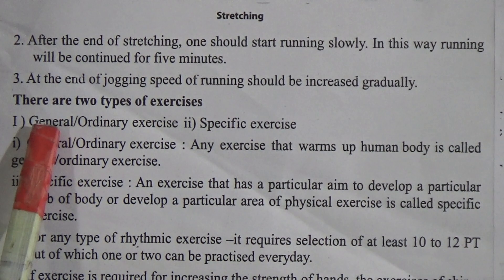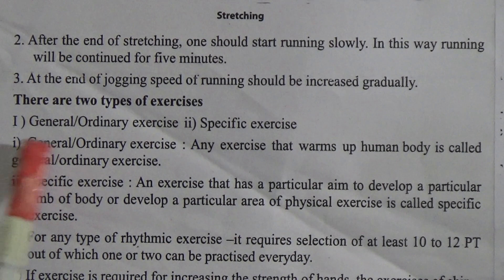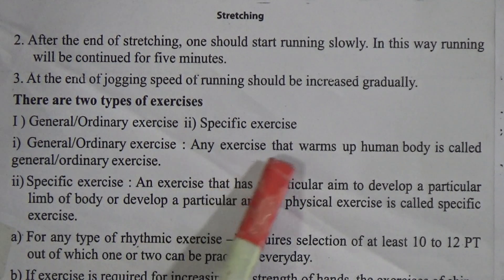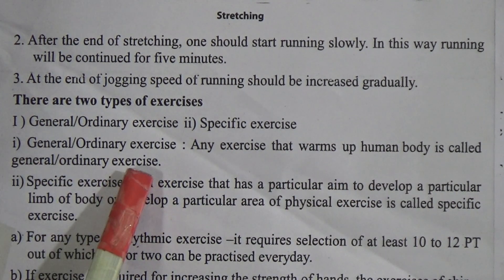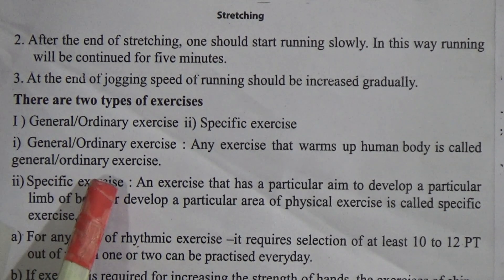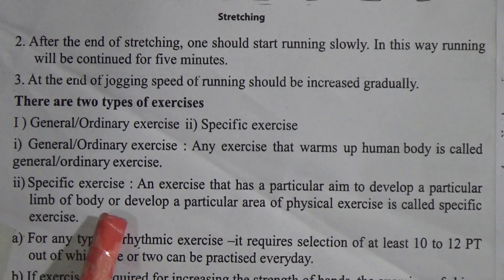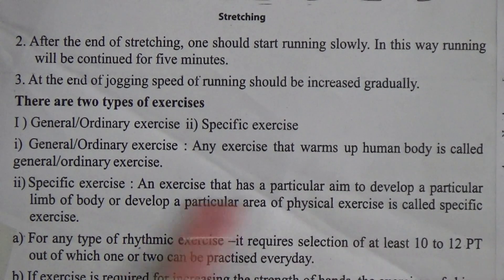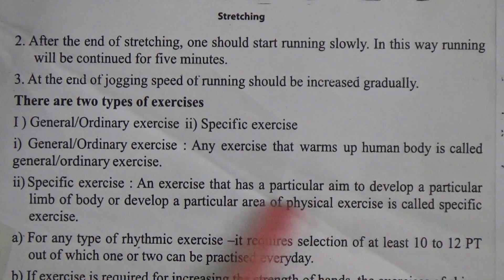Number 1: general or ordinary exercise. Number 2: specific exercise. General or ordinary exercise — any exercise that warms up the human body is called general or ordinary exercise. Specific exercise — an exercise that has a particular aim to develop a particular limb of the body or develop a particular area of physical fitness is called a specific exercise.